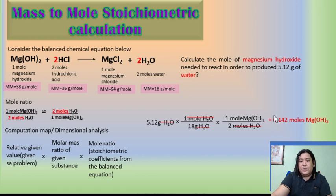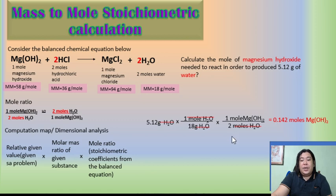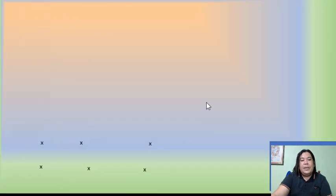In this final answer, the leading zero is not considered significant because all leading zeros are not significant. Only non-zero digits are considered significant. A zero becomes significant only if it is a trailing zero or if it is between two non-zero digits. Since 5.12 has 3 significant figures, the final answer should also have 3 significant figures.